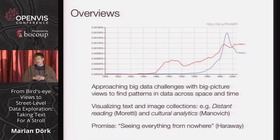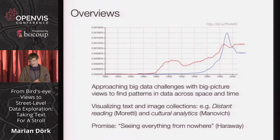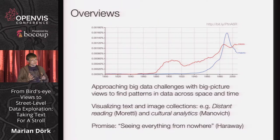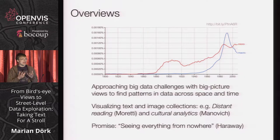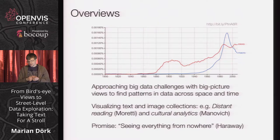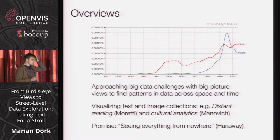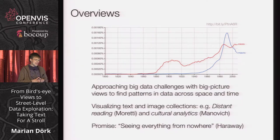For example, the n-gram viewer by Google allows us to compare how certain words have been used differently in books over the last decades and centuries. I've plotted here the varying use of micro versus macro — if you pay close attention, micro has been catching up recently. These types of tools are very powerful, and they are promoted to allow us to grapple with big data challenges by providing big picture perspectives to find patterns and relationships across time and space. But when we deal with data visualization in more cultural or literary contexts — visualizing text collections, image collections — I think there are some limitations with these reduced abstract views.